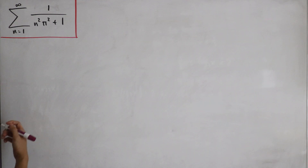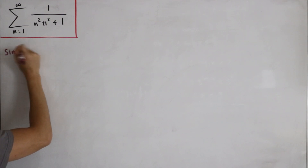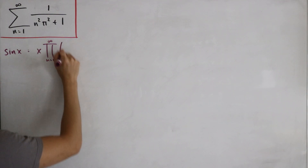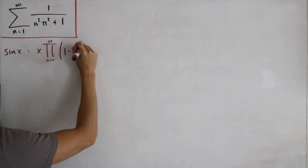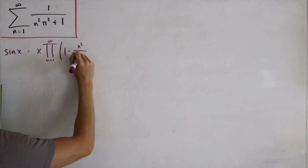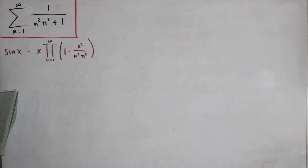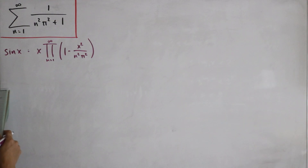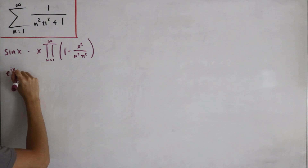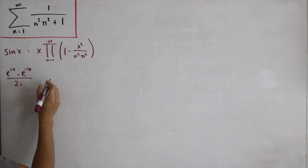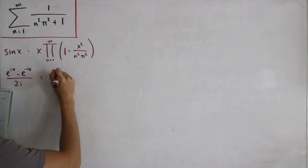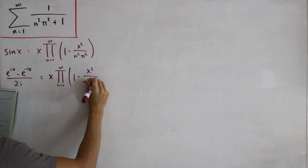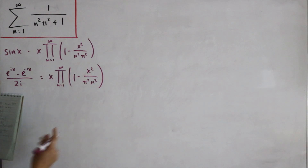Euler's infinite sine product states that sine of x equals x multiplied by the infinite product from n equals 1 of (1 minus x squared divided by n squared pi squared). We'll also use the complex exponential definition of sine: sine of x equals (e^(ix) minus e^(-ix)) divided by 2i, set equal to the right-hand side: x times the infinite product of (1 minus x squared divided by n squared pi squared).